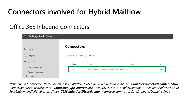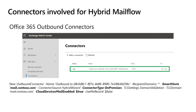On the Office 365 side, a new inbound connector of type on-premises will be created to accept emails from on-premises servers. The cloud services mail enabled parameter will be set to true, and the TLS sender certificate name will match your accepted domain. Also, an outbound connector of type on-premises will be created to send email to on-prem. The HCW wizard will set the smart host pointing to the on-premises server based on your input while running the wizard. The cloud services mail enabled parameter would be set to true, just like all other connectors created by HCW.